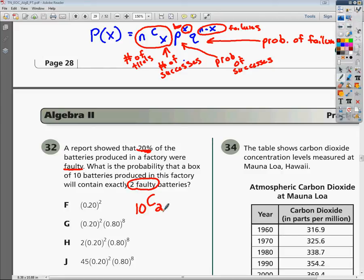All right, now setting up the rest of this. I have written up here that p is the probability of successes. Well, it says right here that there's a 20% chance that the batteries are faulty. So you're going to write that as a decimal as 0.20. And how many of those batteries out of the 10 would be faulty? Well, that's just going to be two of them.